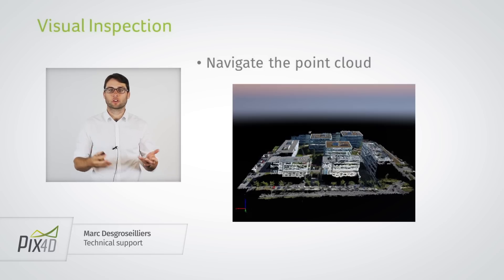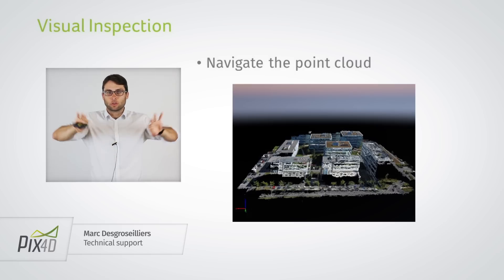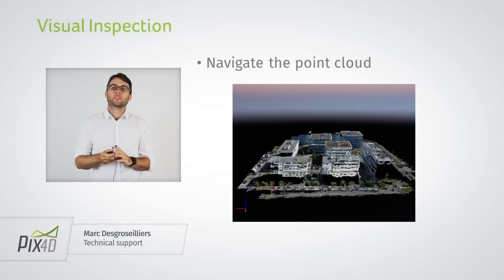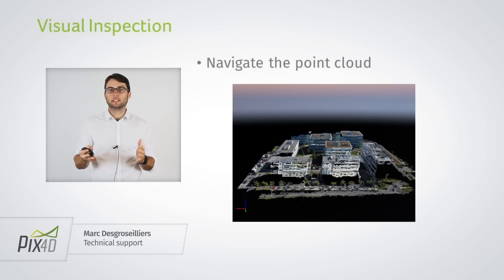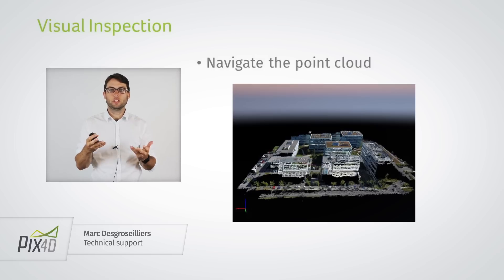You make sure that the features are where you would expect them to be and that your model is not curved down or curved up. For example, in the image you see here, if you look closely you will see that the buildings are slanted. Clearly something went wrong and you need to look into it and fix it.